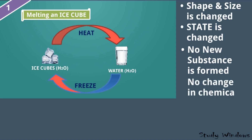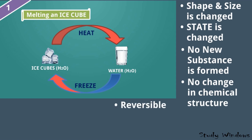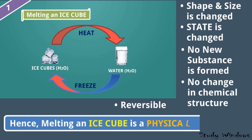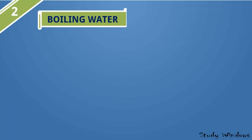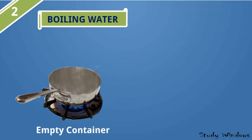There is no change in chemical structure — the chemical formula of ice cube is H₂O and water is also H₂O. It is reversible: we can change ice cube to water and get back to ice cube as well. Hence, melting an ice cube is a physical change.